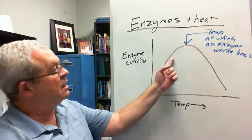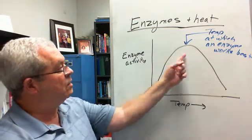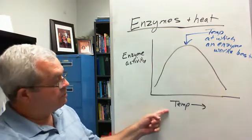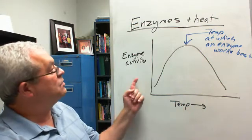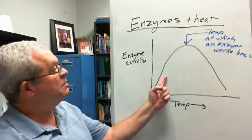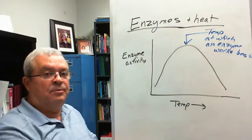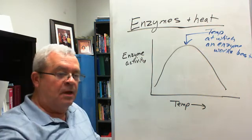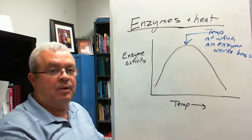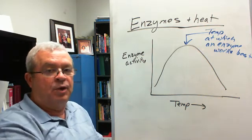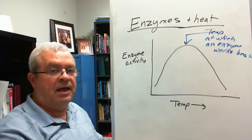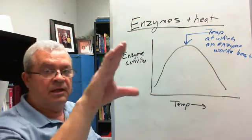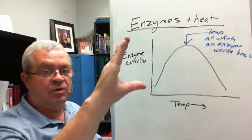Now let's explain the uphill and the downhill — first, the uphill. It looks like as temperature goes up, at least for a while, enzyme activity improves and improves. What could be doing that? Referring back to our picture of Mr. Blue Guy and Mr. Red Guy — does Mr. Blue Guy have eyes and look around? An enzyme is still just a protein molecule — just a molecule.